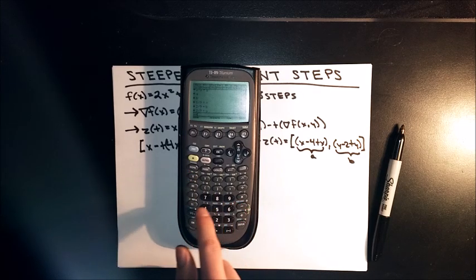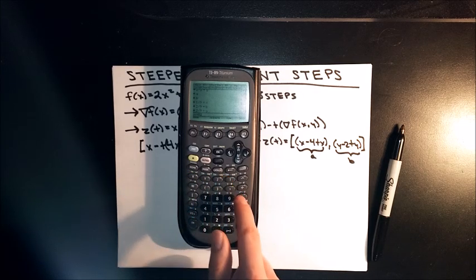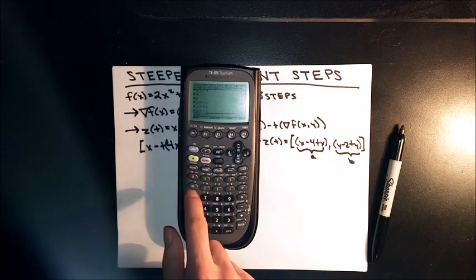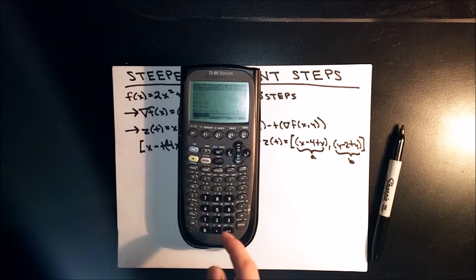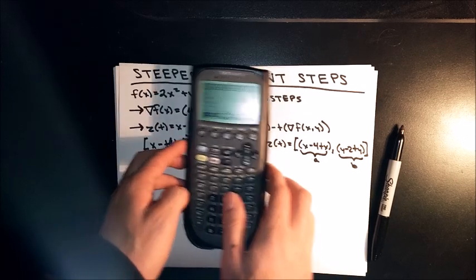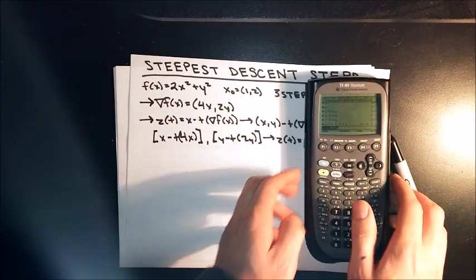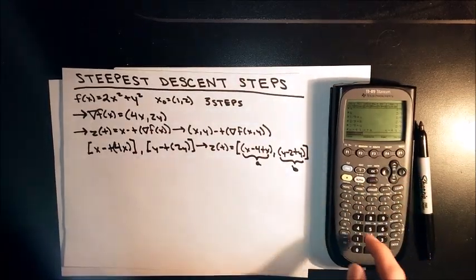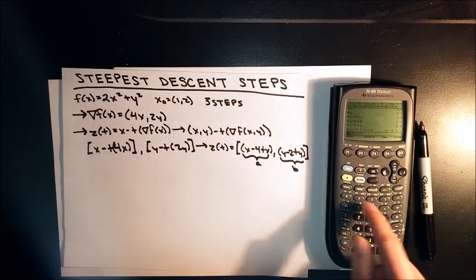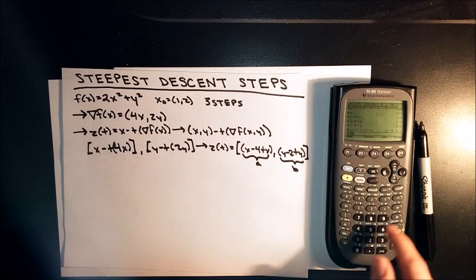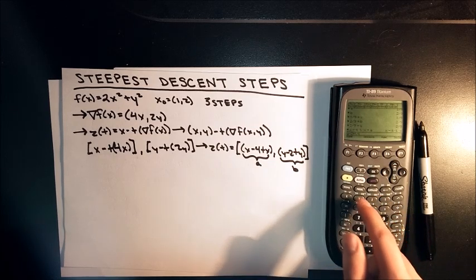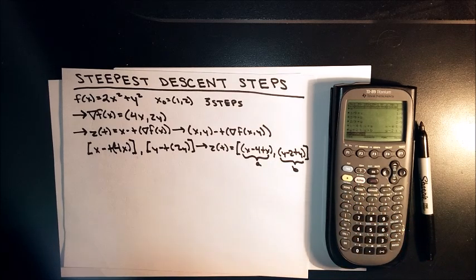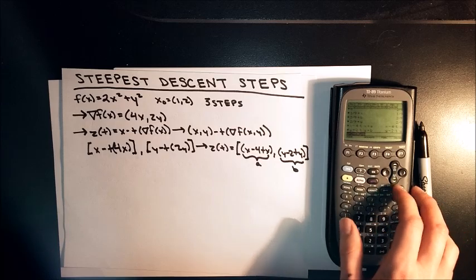I'm going to hit x minus 4t times x, which was this, stored as a. Let's see if I can get a better view. And y minus 2 times t times y, stored as b. Okay. Now let's continue with our next step.